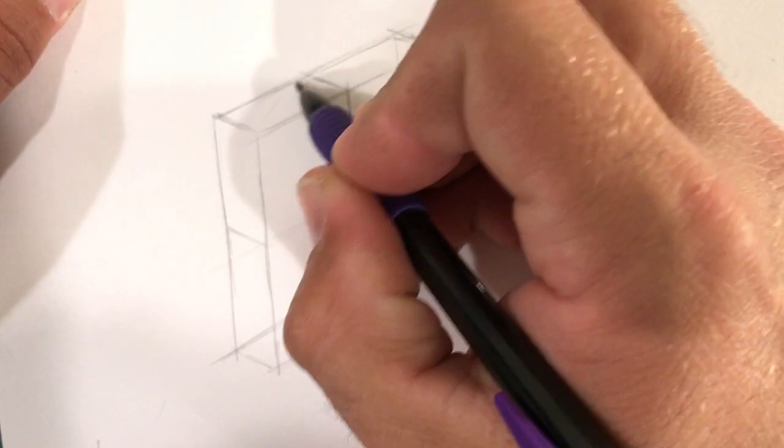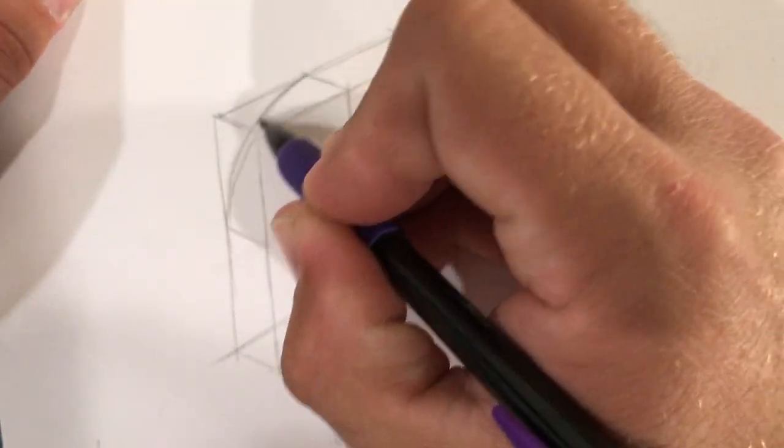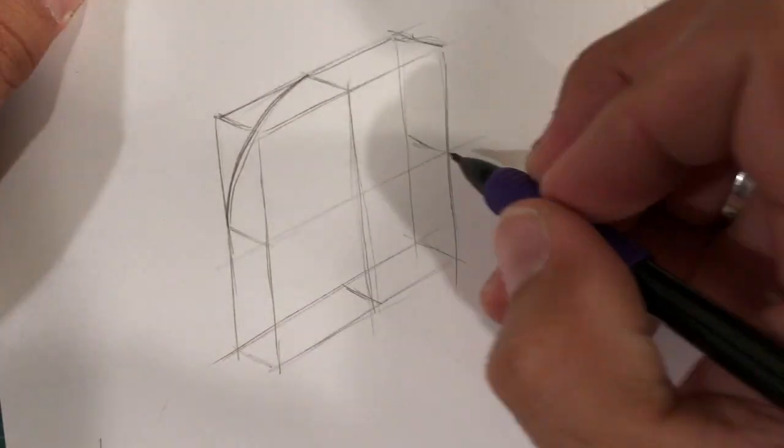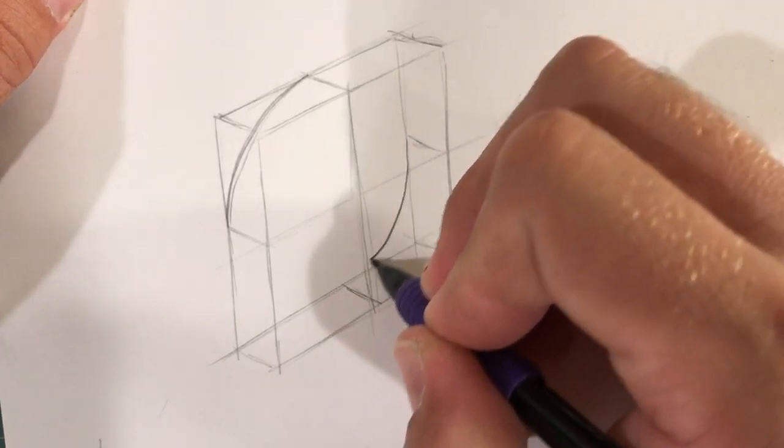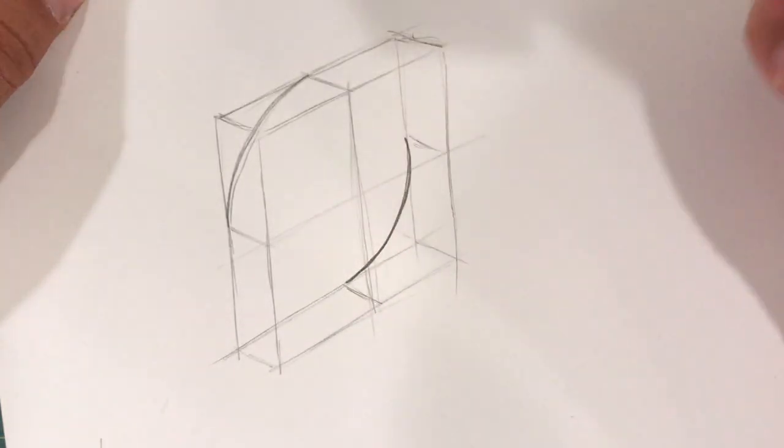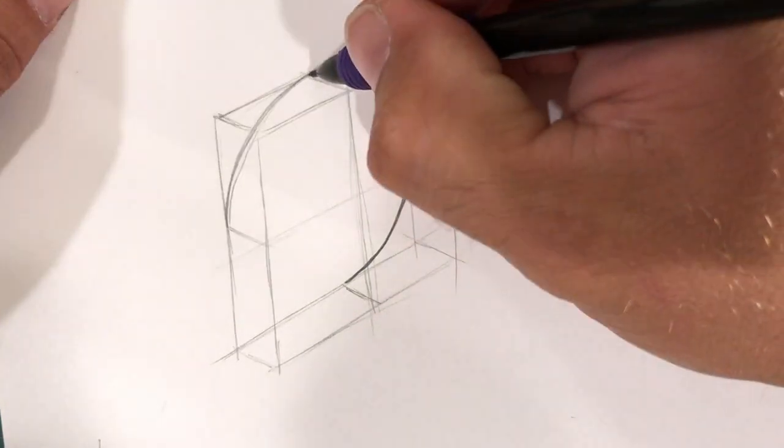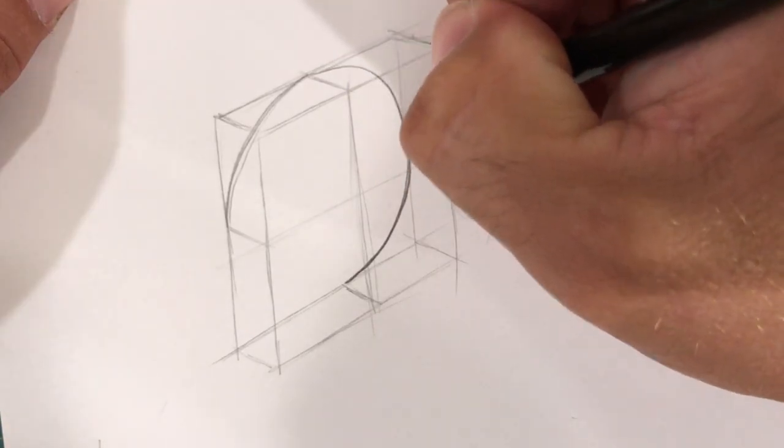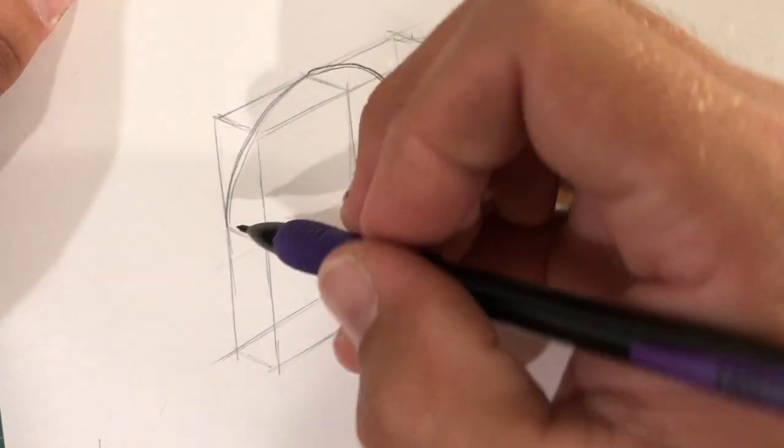Start with the back. We'll arc it. We'll arc the back too, right here. This gives us a kind of a starting point.